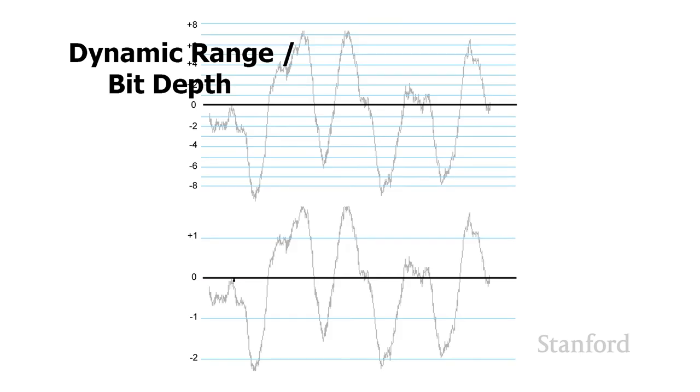Here's two examples. In this first example, I'm storing numbers between plus 8 and negative 8, and then the second example I'm storing numbers from plus 2 to negative 2.